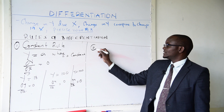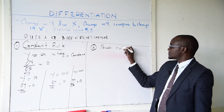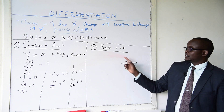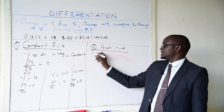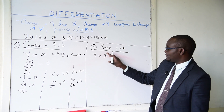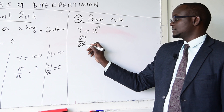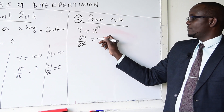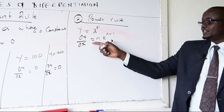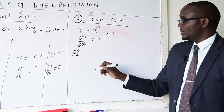The second rule is what we call the power rule. The power rule is whereby we have x raised to a certain power. For instance, when you are given y equals x^n, when you differentiate this, dy/dx — the rule says that n becomes a multiplier of x, and the new power becomes n minus 1.